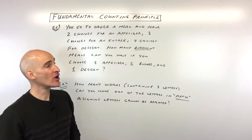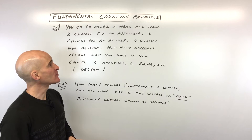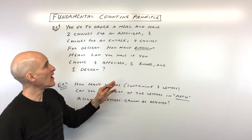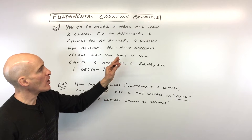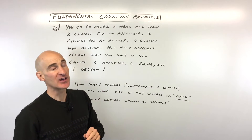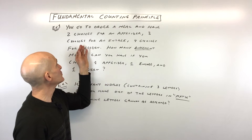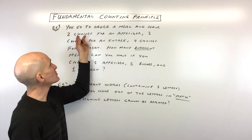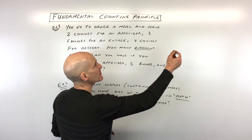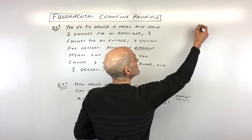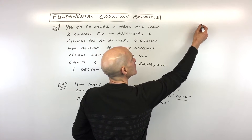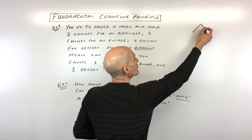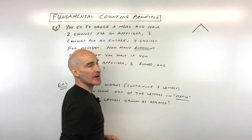So the reason they call this the multiplication counting principle — I'll show you why that is. One way to look at this is to make a tree diagram. So you have two choices for an appetizer. You can either go down this route or this route.